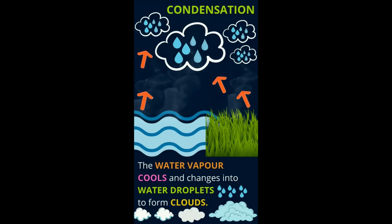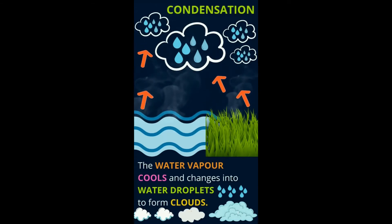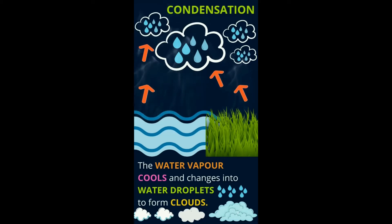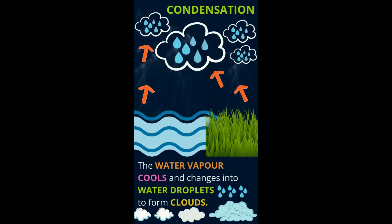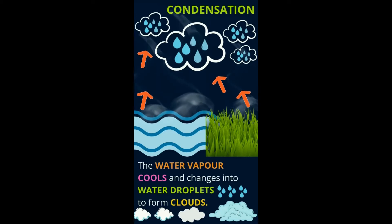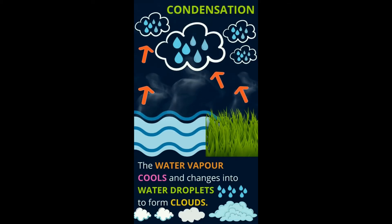And now we are going to learn condensation. What is condensation? This water vapor that was in the atmosphere — once it's in the atmosphere, it changes into water droplets. Can you see lots of water drops in this picture? So this water vapor cools down, and when it cools down, it changes into water droplets. And lots and lots of water droplets form clouds. So this process is called condensation — the water vapor cools and changes into water droplets to form clouds.